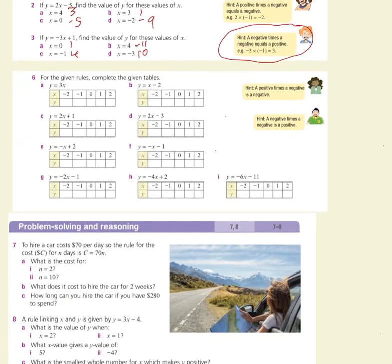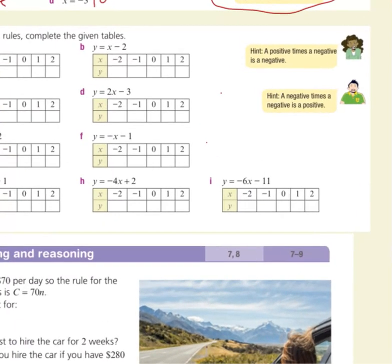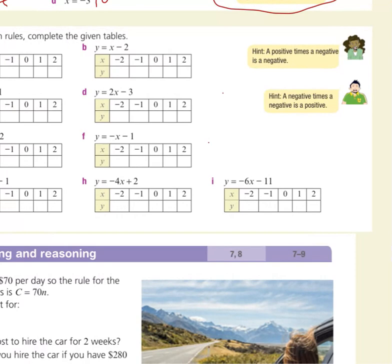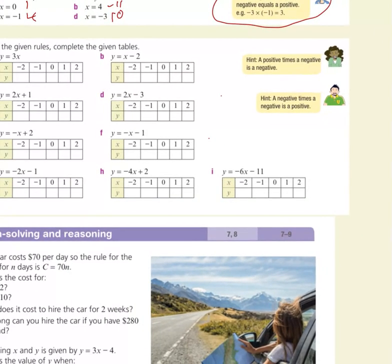For the given rules, complete the given tables — it's just about following the patterns. y equals 3x means y will be 3 times bigger than x. Minus 2 times 3 is minus 6, then minus 3, 0, 3, 6.